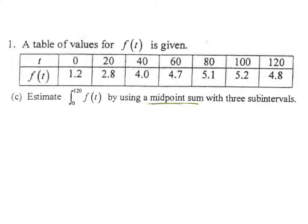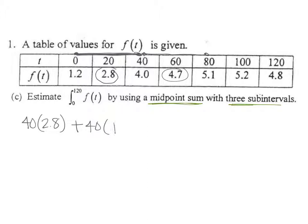Now we're going to look at the midpoint sum, and this time we have three subintervals because we need to skip to the actual midpoint. The width goes from 0 all the way out to 40, and we use the midpoint of that interval for the rectangle height. So we have: 40 times 2.8, plus 40 times 4.7 (midpoint of 40 to 80), plus 40 times 5.2 (midpoint of 80 to 120), giving us 508.